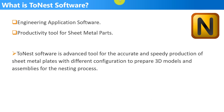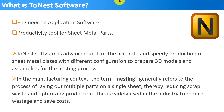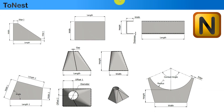Using 2NIST software you will be able to generate sheet metal plates for different shapes and prepare your model for nesting studies. In manufacturing, the term nesting generally refers to the process of laying out multiple parts on a single sheet, thereby reducing scrap waste and optimizing production. This is widely used in the industry to reduce wastage and save costs.